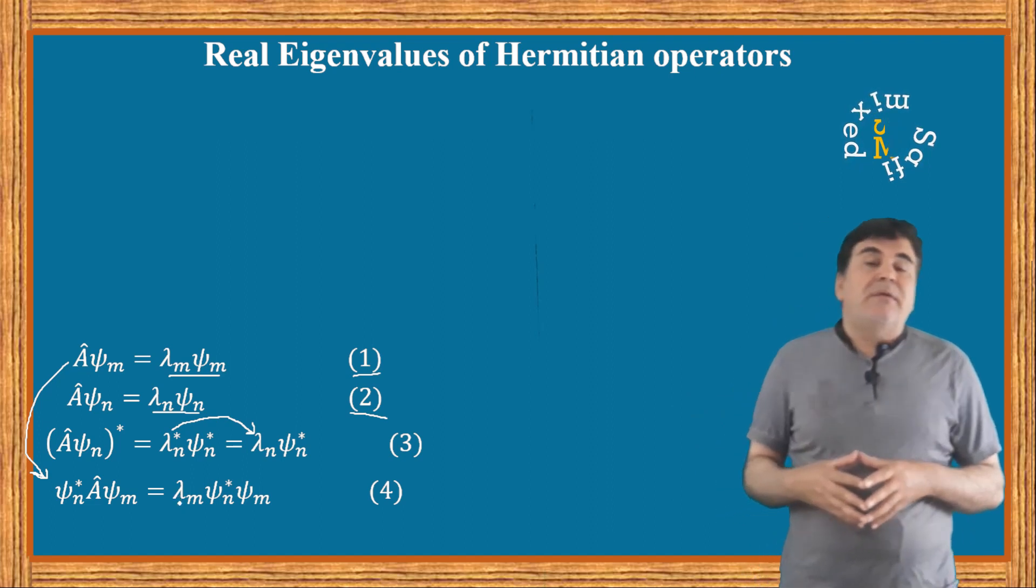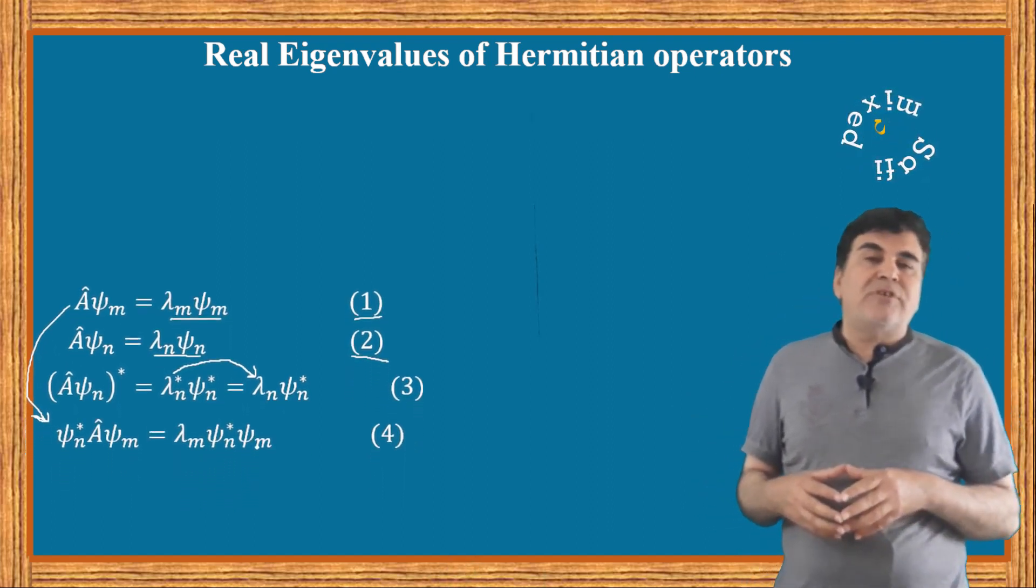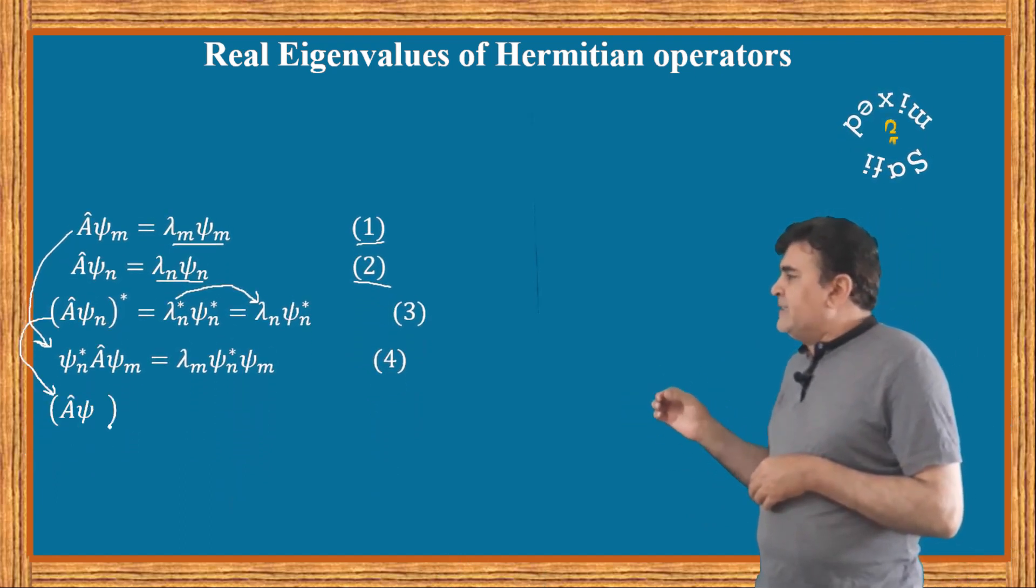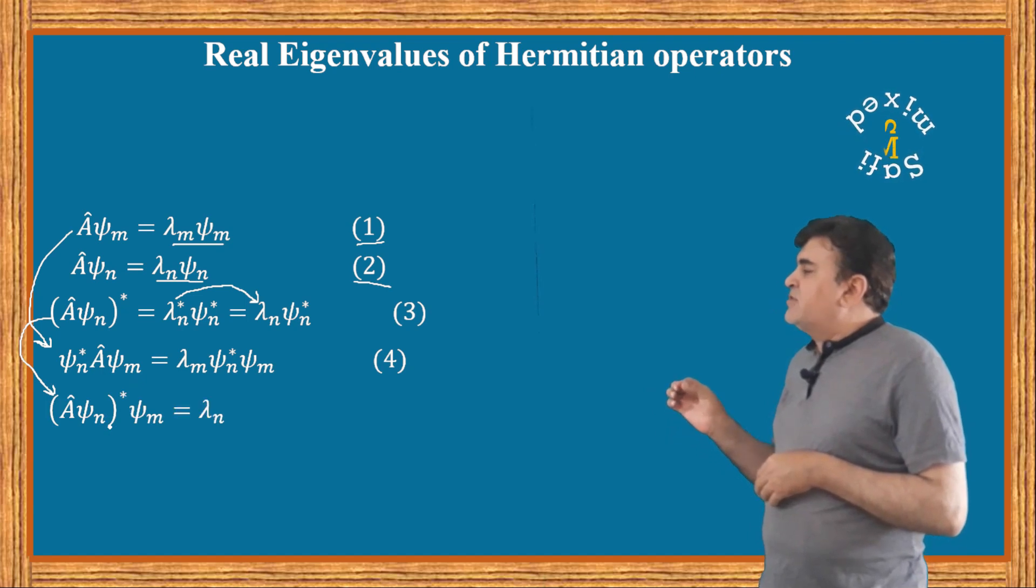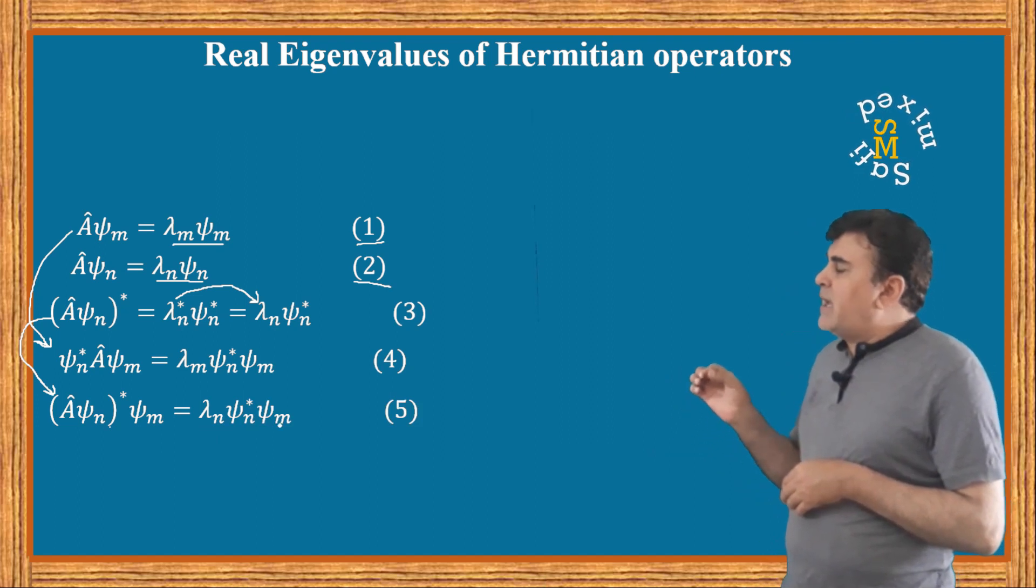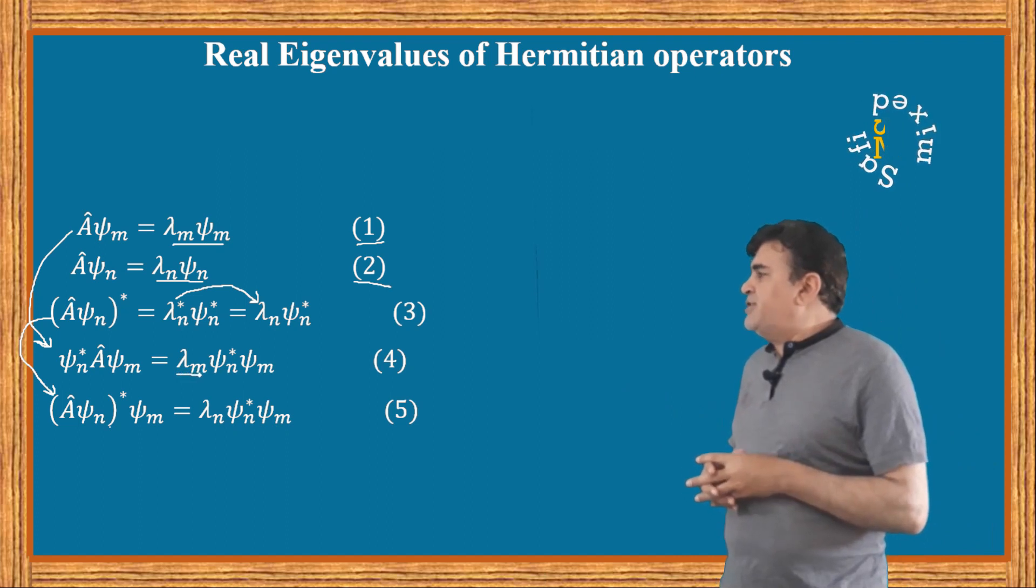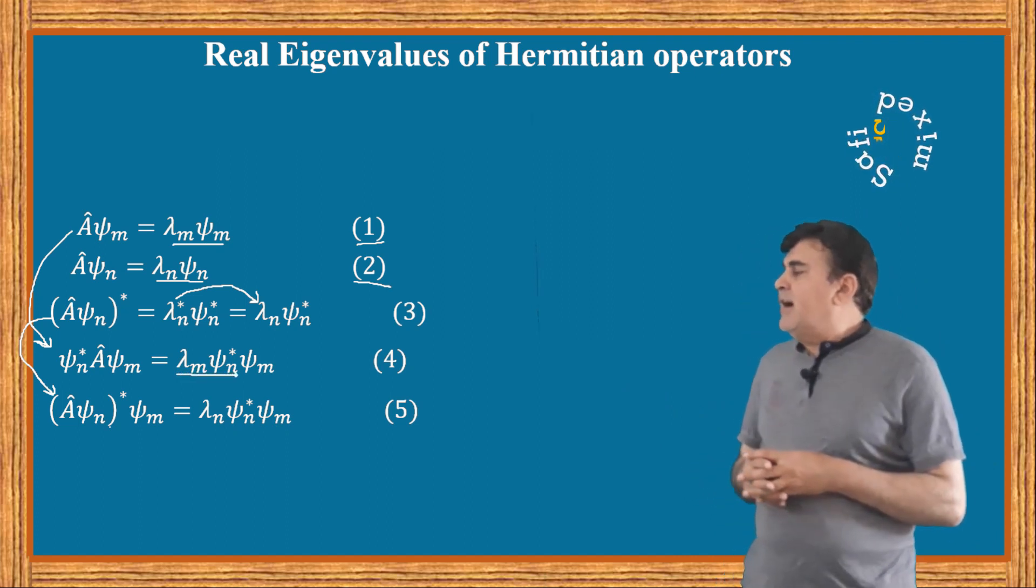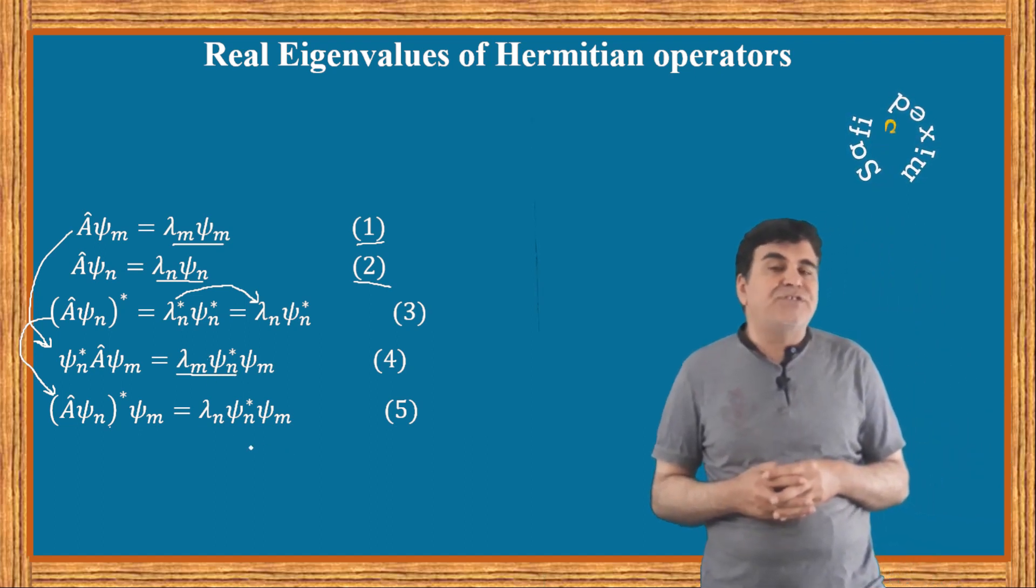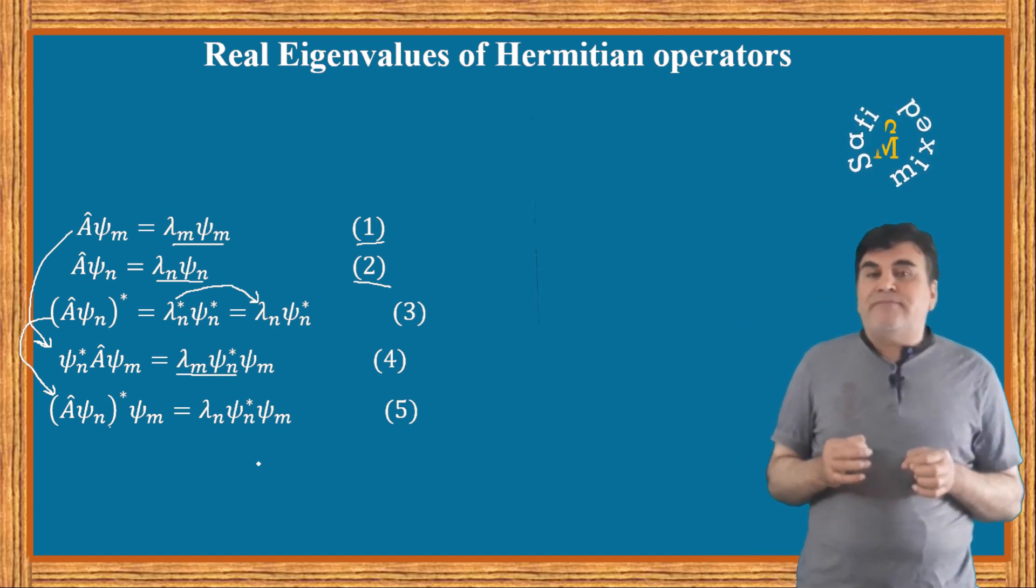Similarly, multiplying equation 3 with ψ_m from the right, I can write (Aψ_n)* times ψ_m equals λ_n ψ_n* ψ_m. You see in equation 4 I have changed the position of eigenvalue λ_m with respect to eigenfunction ψ_n* ψ_m, an allowed operation for numbers.